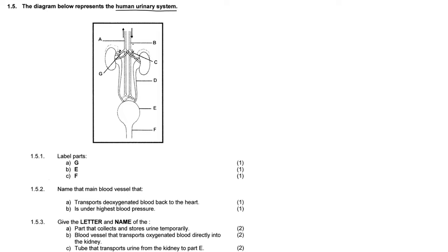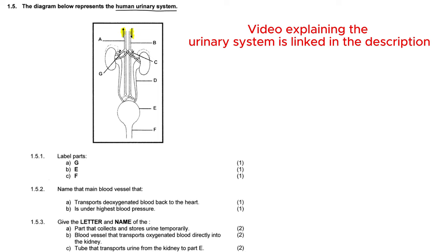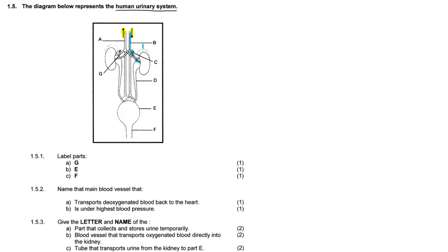The urinary system is responsible for producing urine while filtering the blood. Here in this diagram we can start analyzing. You can see there is an arrow moving upward showing that blood is leaving the kidneys, and an arrow moving downward showing that blood is entering the kidneys. If we trace carefully, this tube here moves down into the kidney, meaning blood is moving into the kidney to be filtered.